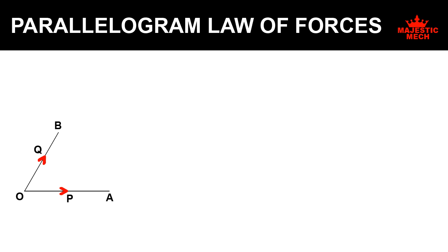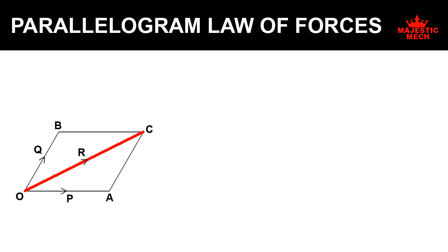So OA and OB represent forces P and Q respectively in magnitude and direction. Now let's complete the parallelogram by drawing BC parallel to OA and AC parallel to OB. According to the parallelogram law of forces, the diagonal OC that passes through the point of action of P and Q represents the resultant of the two forces in magnitude and direction. The length of the diagonal represents the magnitude of the resultant force and the arrow mark represents the direction of the resultant force.